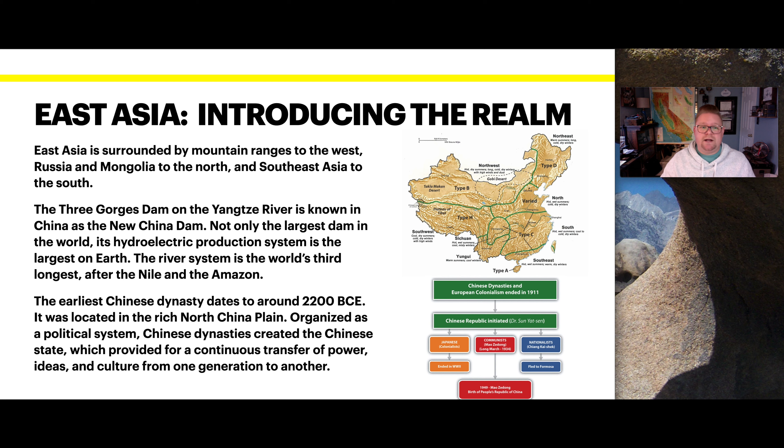East Asia is surrounded by mountain ranges to the west, Russia and Mongolia to the north, and Southeast Asia to the south.